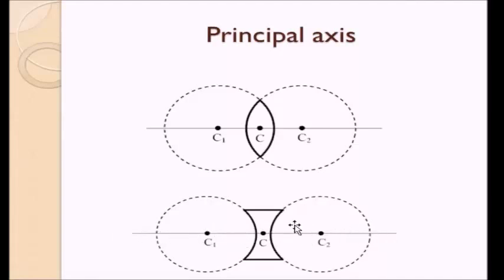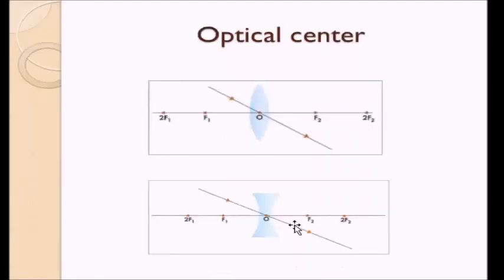Similarly for the concave lens, this is one sphere with its center here and this is the other imaginary sphere with its center here, and this line is our principal axis. So we have seen the center of curvature, understood the radius of curvature, and seen the principal axis for both the concave and convex scenarios. Next let us see what the optical center is.